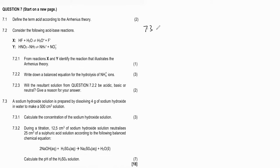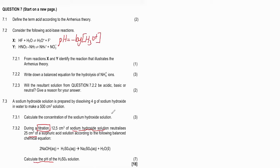7.3.2 says: during a titration, 12.5 cm³ of sodium hydroxide (a base) neutralizes 25 cm³ of sulfuric acid (an acid) according to the given balanced chemical equation. Calculate the pH of the sulfuric acid solution. The formula is pH = −log[H₃O⁺], but first we need to find the concentration of the hydronium ions.